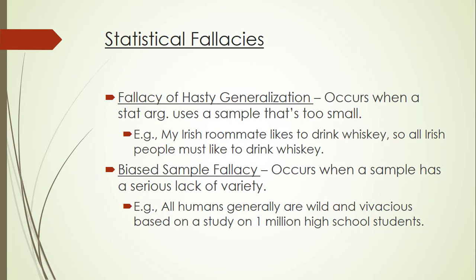Now let's discuss some statistical fallacies. The first is the fallacy of hasty generalization. This occurs when a statistical argument uses a sample that's too small to warrant drawing the conclusion it attempts to draw. Here's an example: my Irish roommate likes to drink whiskey, so all Irish people must like to drink whiskey. This commits the fallacy of hasty generalization — it tries to draw a broad conclusion about the target, all Irish people, merely based on one example.